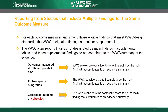When a study reports both the effect of the intervention on a composite score and on one or more subscale scores used to calculate the composite score, the WWC considers the finding based on the composite score to be the main finding, and the subscale findings are reported in supplemental tables.